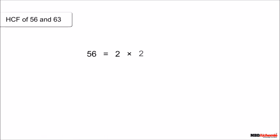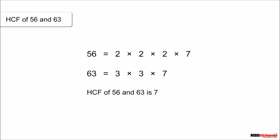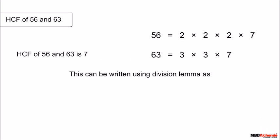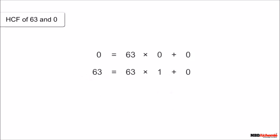We know that the HCF of two numbers is the highest number which divides both numbers. We use division to find the HCF of two numbers. For example, the HCF of 56 and 63 is 7. Using the division lemma, this can be written as: 56 = 7 × 8 + 0, and 63 = 7 × 9 + 0.